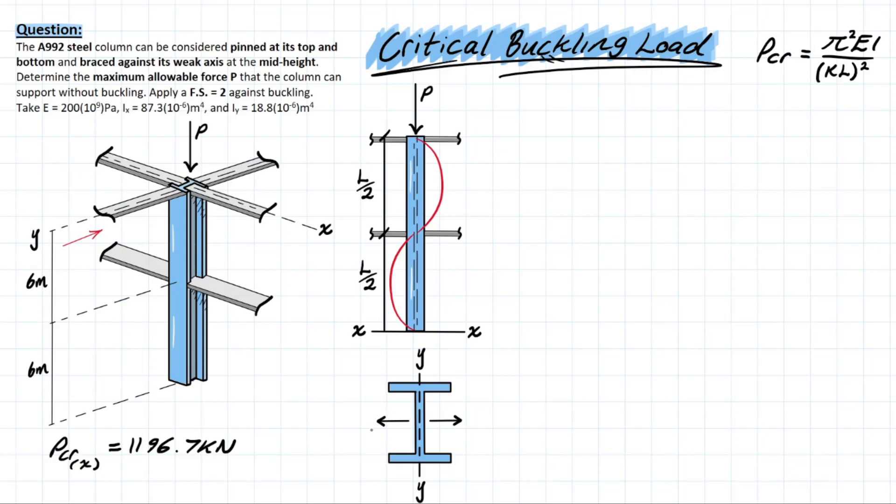If we think logically here, why do we need these lateral braces? It's because we are supporting the weak axis of this column. Engineers understand that the weaker axis is always going to be governing if everything remains exactly the same for a column, so we tend to make things as equal as possible by adding lateral braces to reduce the effective length of buckling.